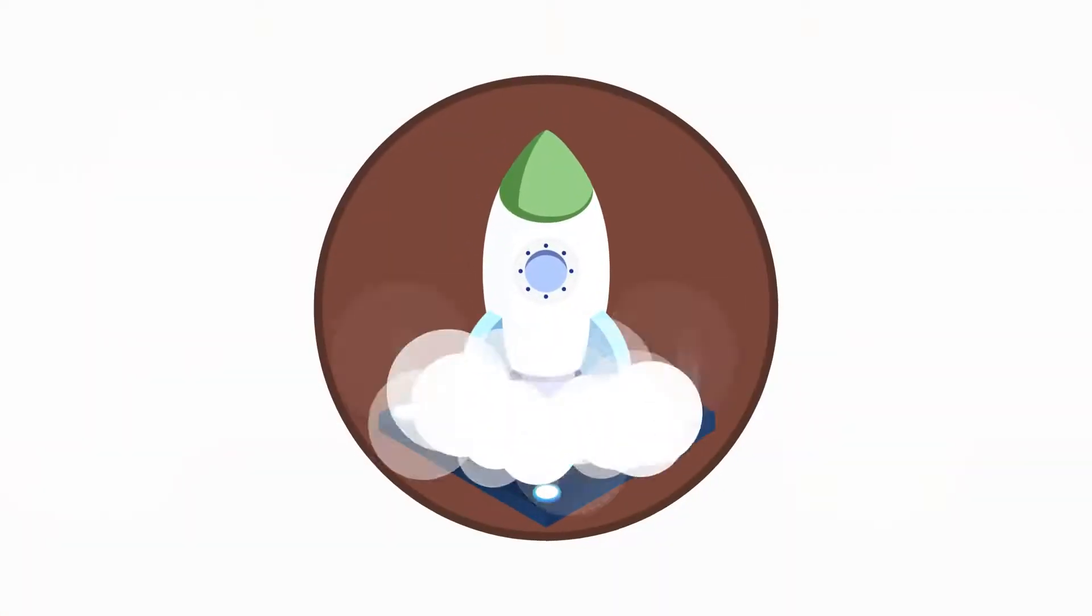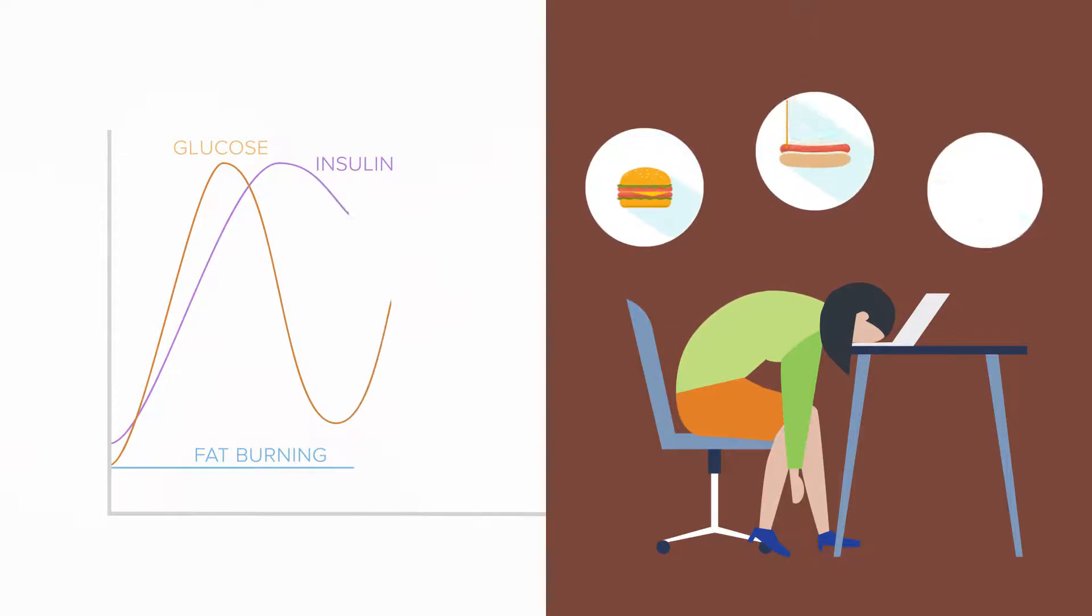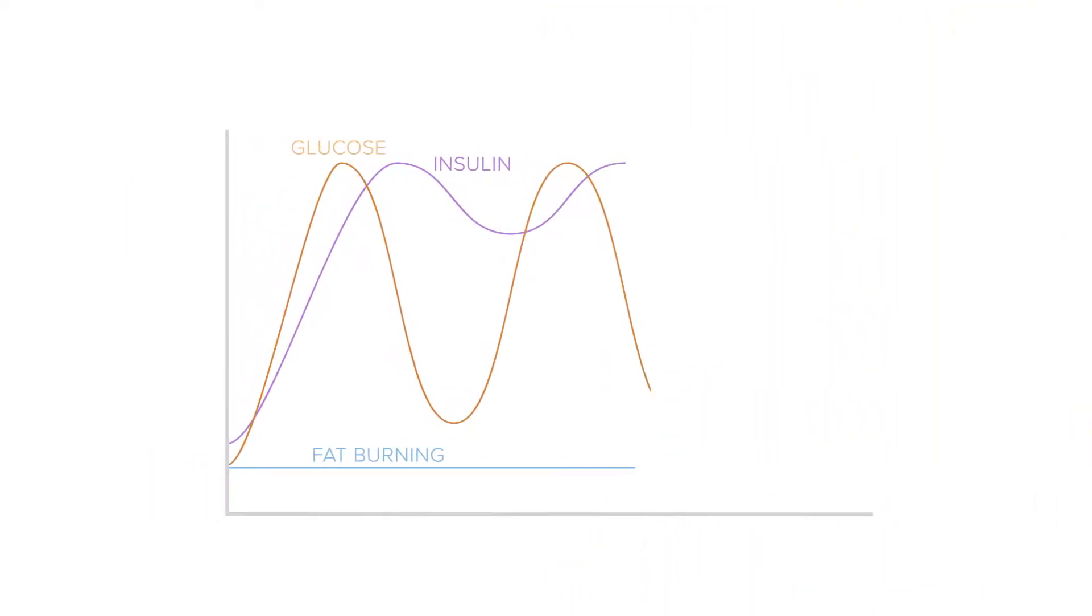Our bodies need constant fuel. After all the glucose in our bloodstream has been distributed, and the energy from stored fat is not easily accessible because of the presence of insulin, we begin to feel sluggish, hungry, and start craving more food. So we eat again, and if the food is high in carbohydrates, more insulin is released, restarting the cycle of energy consumption and storage all over again.